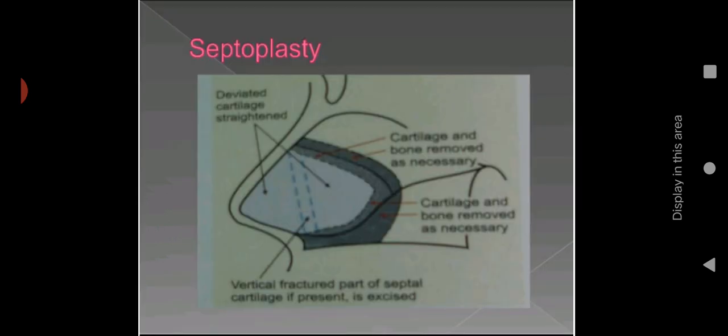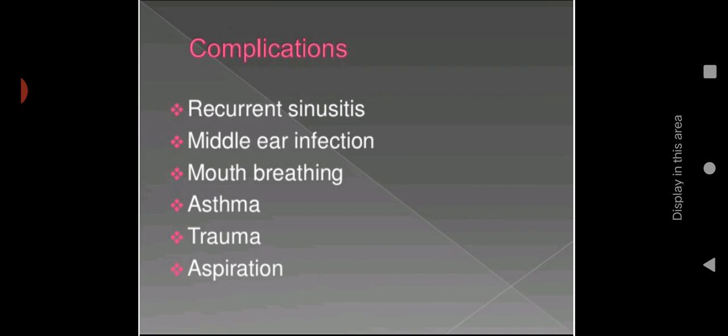In the diagram, you can see the septoplasty procedure — the deviated cartilage shown by the blue line is straightened, cartilage and bone are removed, and fixation is done. Complications include recurrent sinusitis, middle ear infection, mouth breathing, asthma, trauma, and aspiration. Recurrent sinusitis and middle ear infection occur because air pressure is not maintained. Mouth breathing occurs due to nasal obstruction, which can also precipitate asthma.